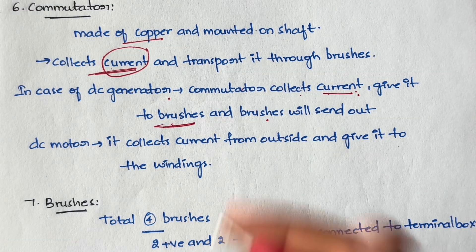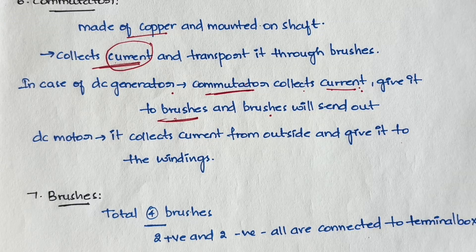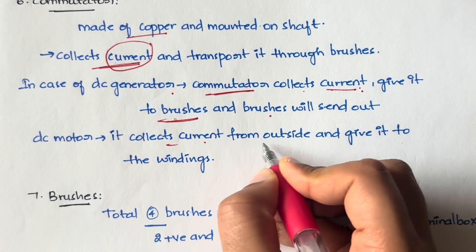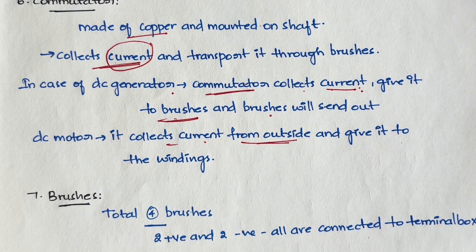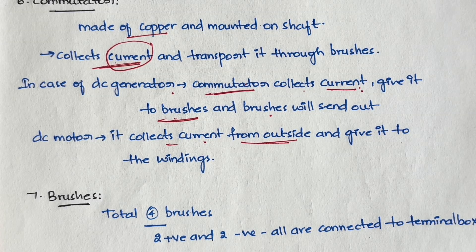In case of a DC motor, it converts electrical energy into mechanical energy. The commutator collects current from outside and gives it to the windings, so the windings generate mechanical energy. If you don't understand this part, don't worry — you will understand it clearly in the next video when I explain the working principles. I'm just giving a high-level explanation here.